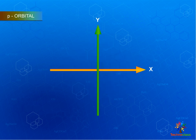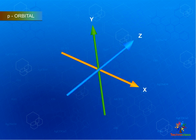P Orbitals, or Principal Orbitals, are dumbbell shaped and have directional character. P Orbitals have 3 possible orientations: